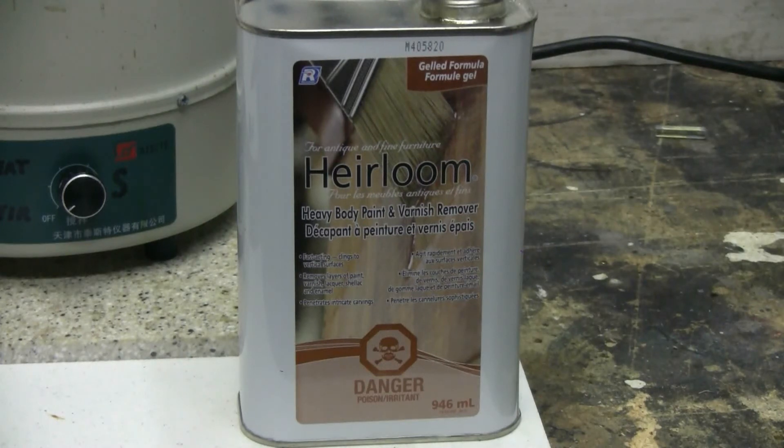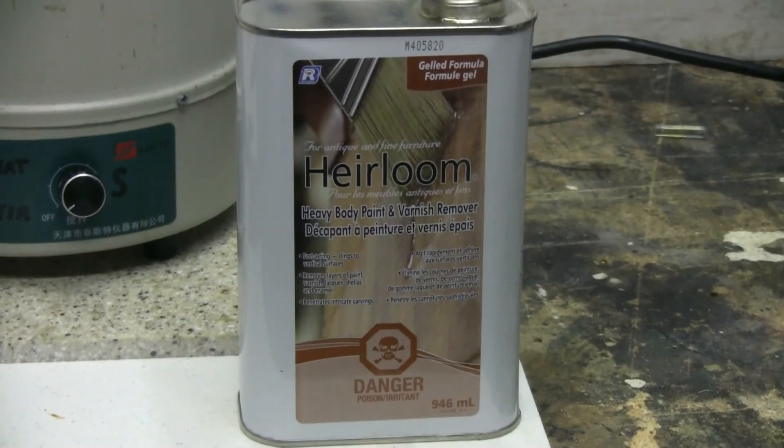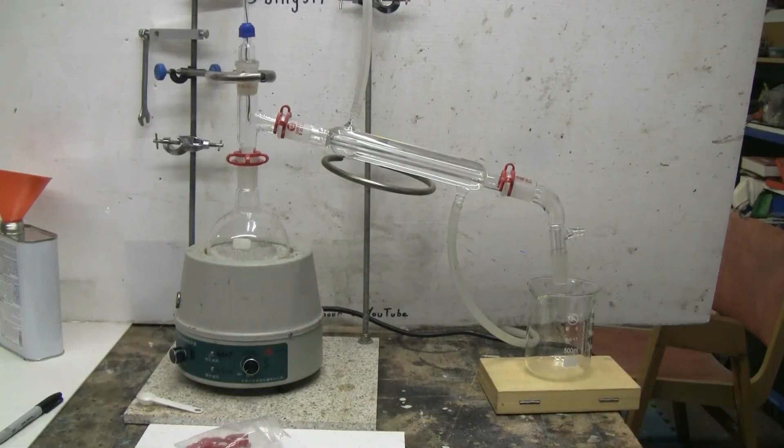As its boiling point is around 39.6 Celsius, I should hopefully be able to separate it from the methanol and the toluene. Let's give it a try. I've put approximately 250 milliliters of the paint and varnish remover product into a 500 milliliter boiling flask.